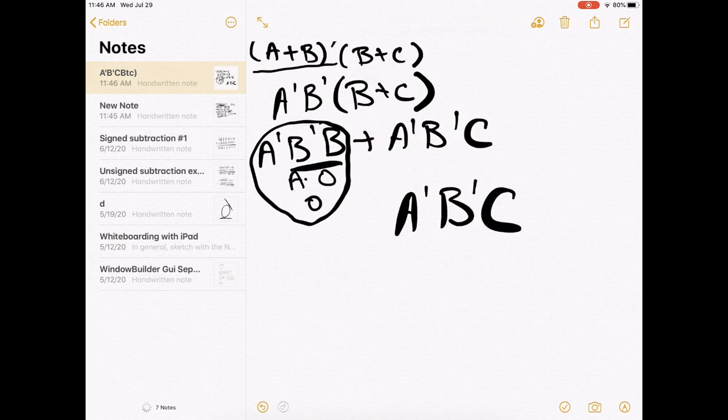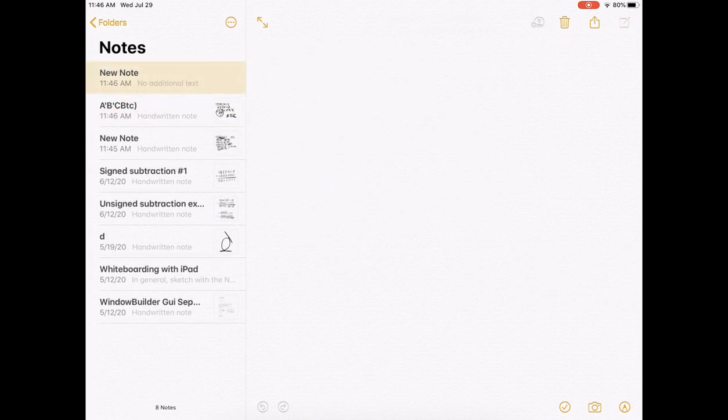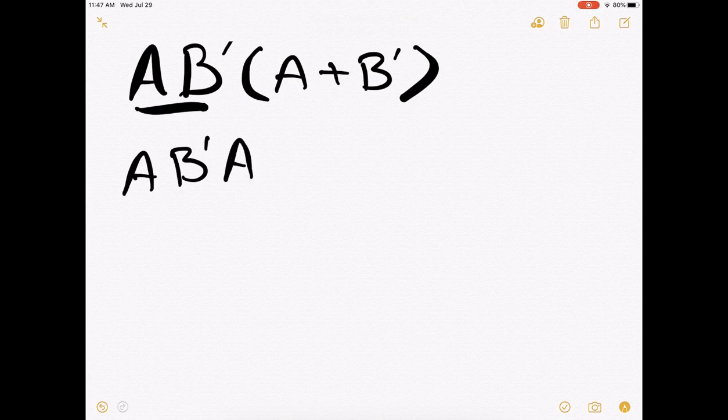All right, try one more. In this one, the very last exercise from the slide is A, B, and there's a knot on the B. Anded with A or B, and there's also a knot on that B. The first thing to do would be to distribute that across the terms of the or. So we get A, B naught, A, or A, B naught, B naught.